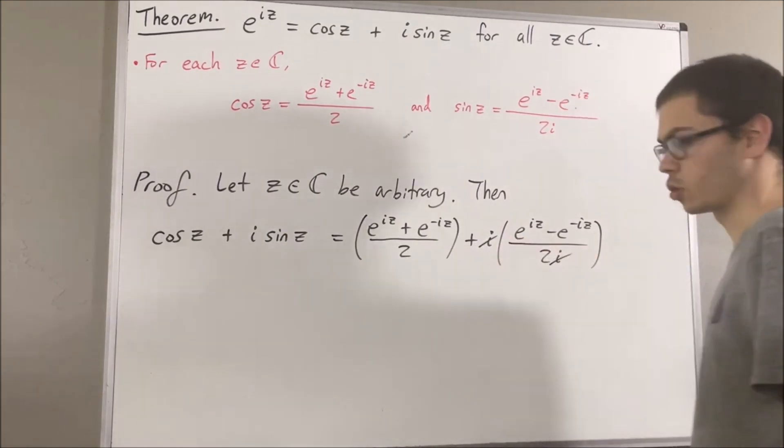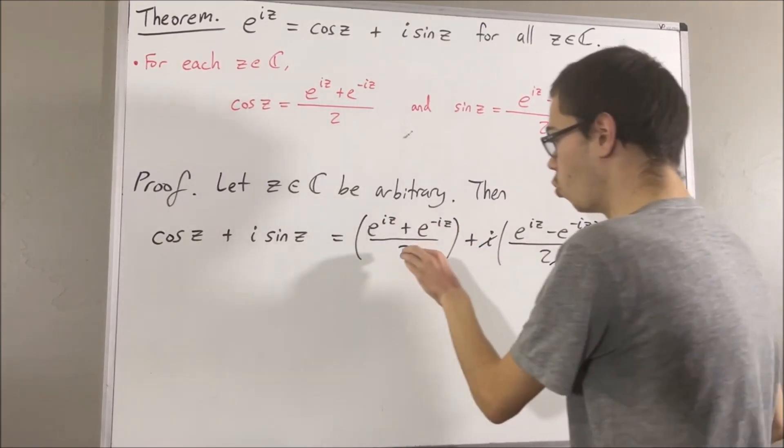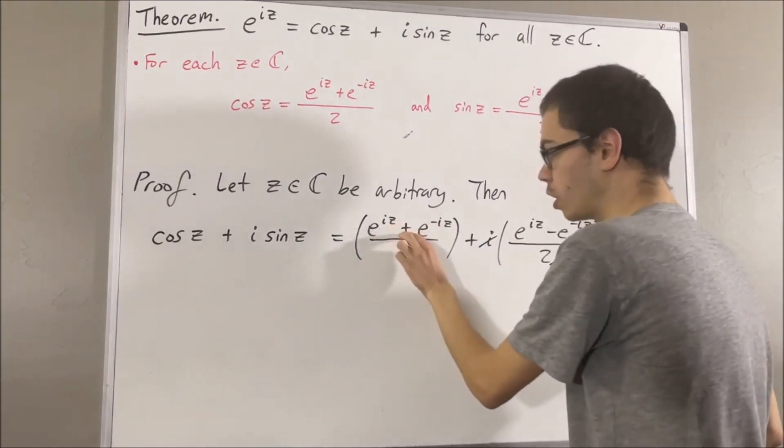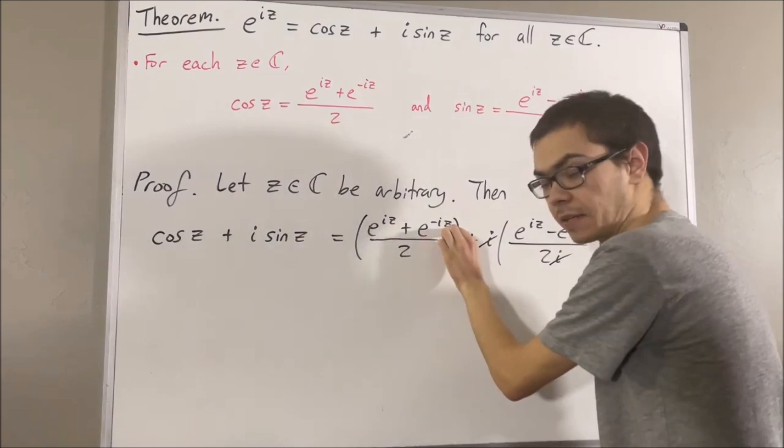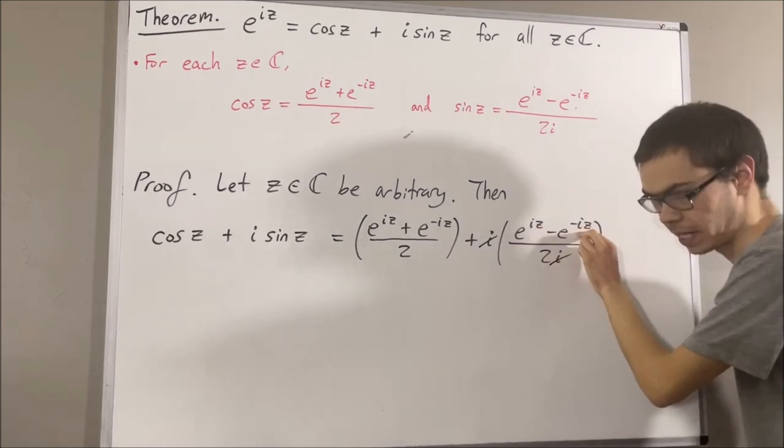the i's cancel out. And so, what we're left with here is 1 half e to the iz plus 1 half e to the negative iz plus 1 half e to the iz minus 1 half e to the negative iz.